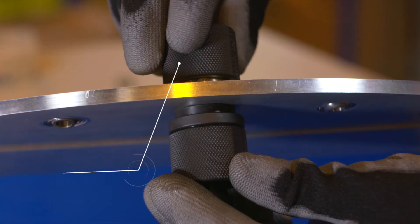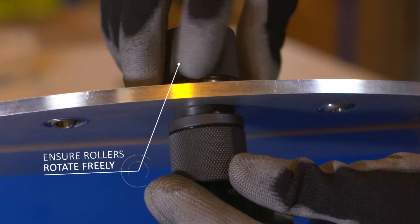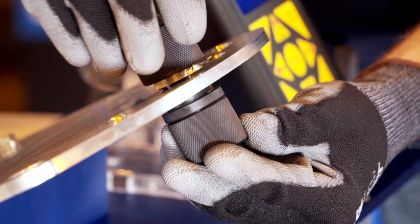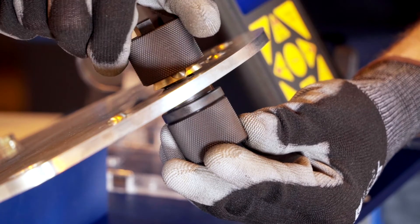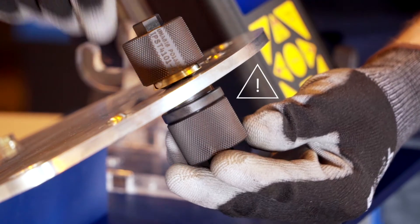For the entire swaging process, the roller assembly should always be able to rotate by hand, allowing the rollers to freely rotate and not drag. Over-tightening the tool could cause damage to the bearing and the tool.